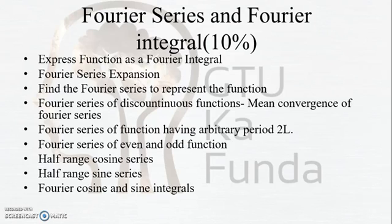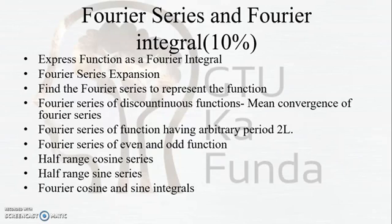Fourier Series and Fourier Integral has 10% weightage, but as you can see in the papers, they ask 14 marks worth of questions from this topic. You can expect question types such as: express the function as a Fourier integral, Fourier series expansion, Fourier series to represent a function, Fourier series for discontinuous functions, mean convergence of Fourier series, even and odd functions, arbitrary period 2L, half-range cosine series, half-range sine series, and Fourier cosine and sine integrals. This chapter can give you around 15 to 16 marks.